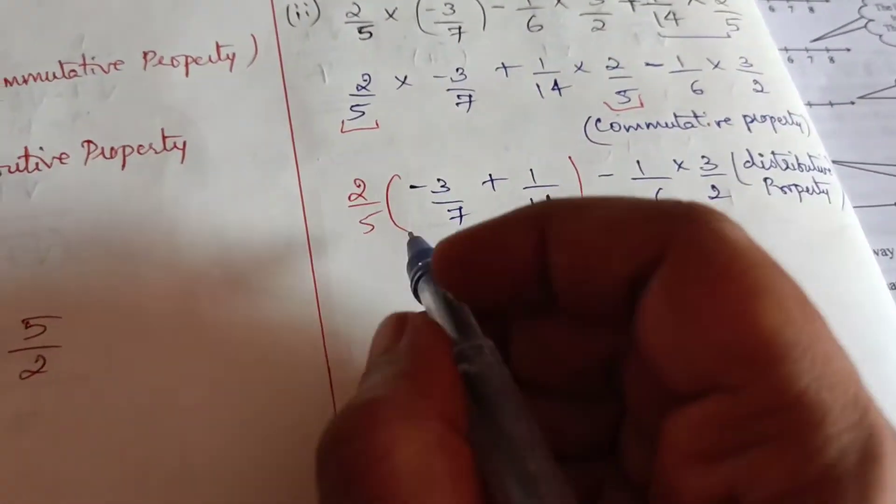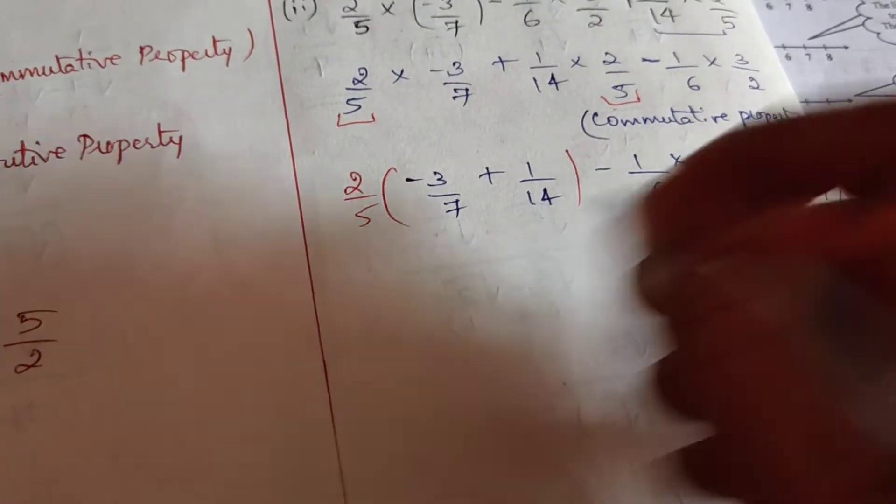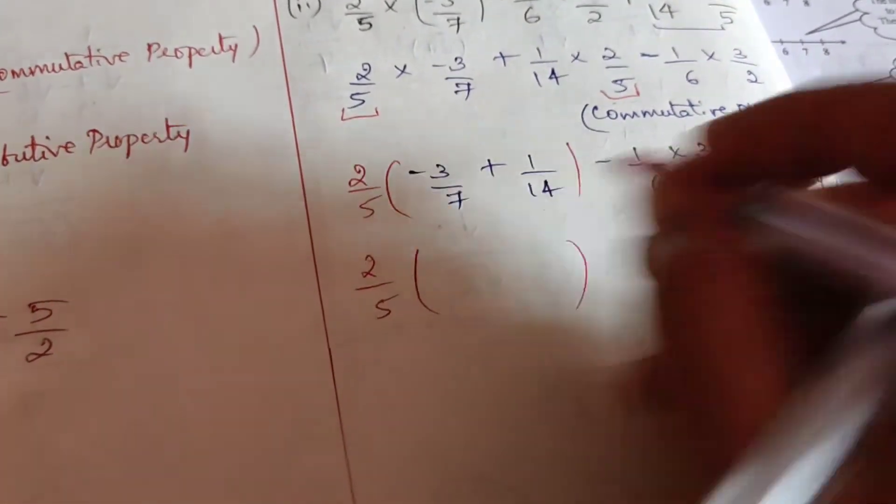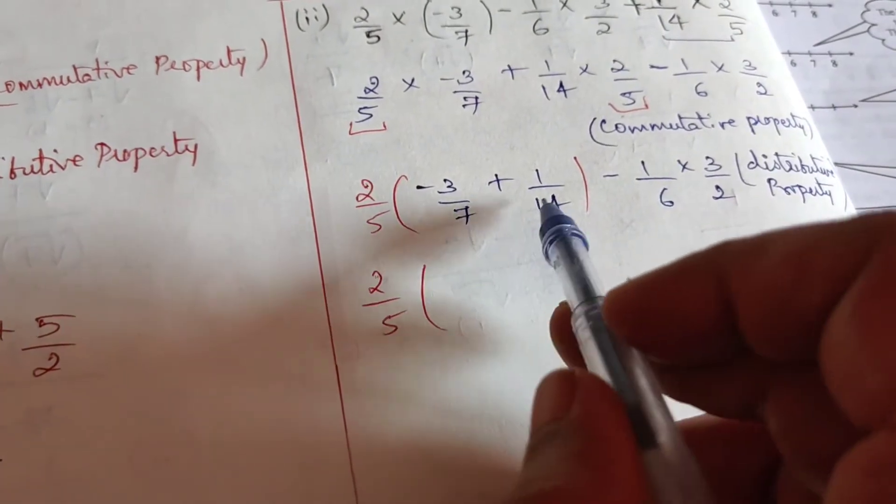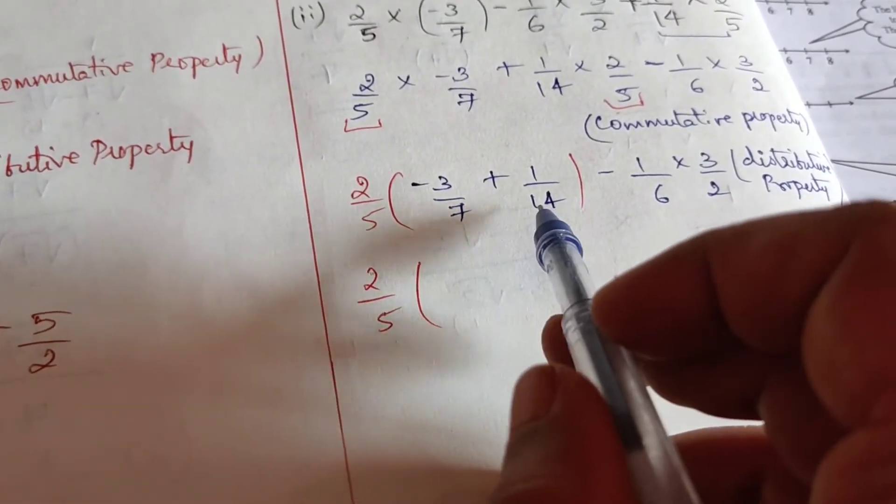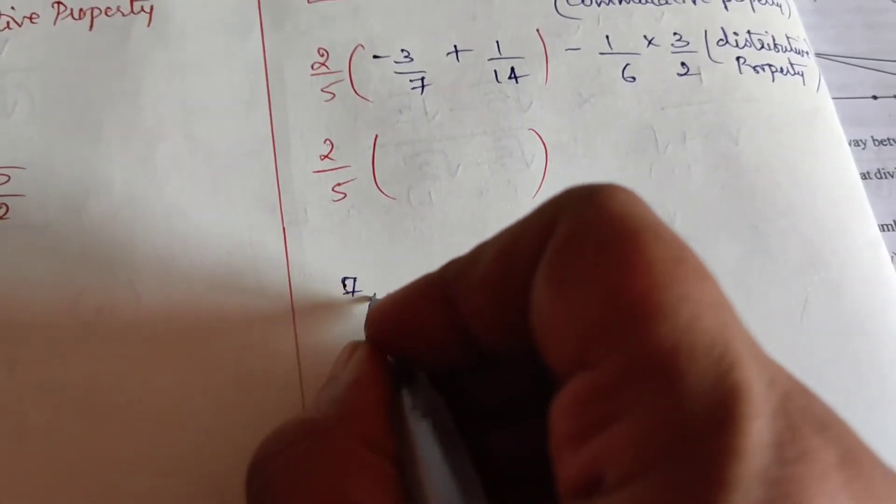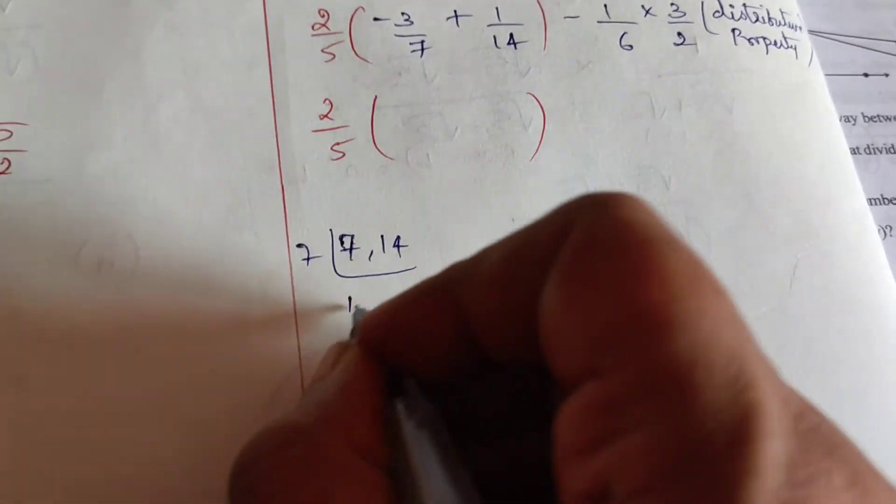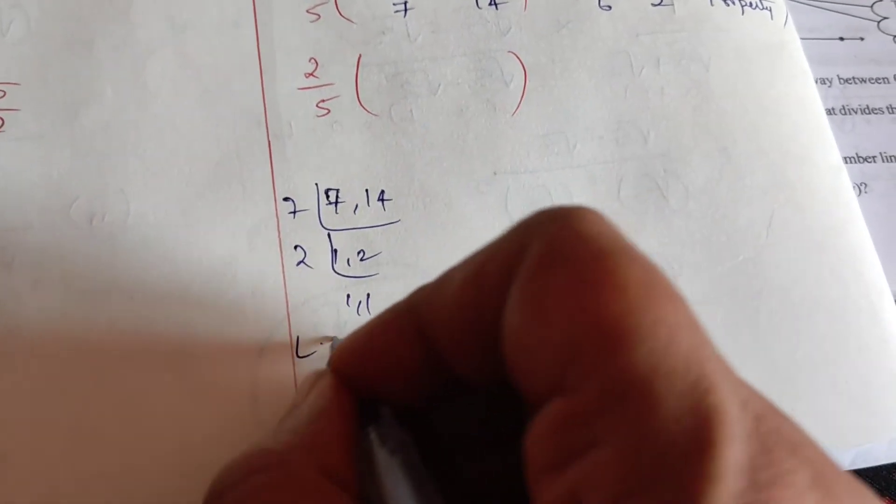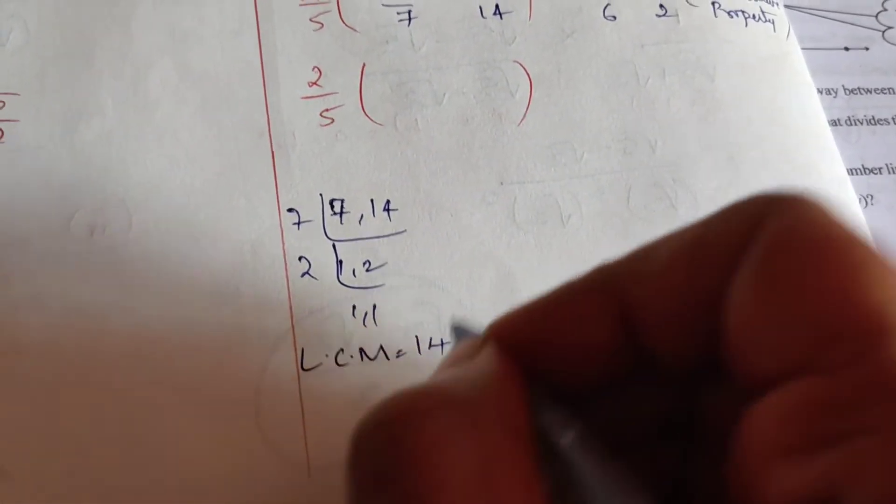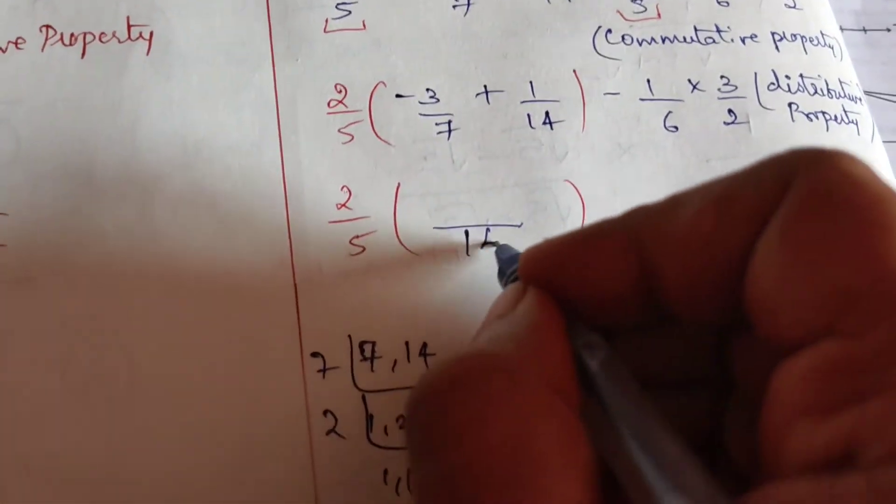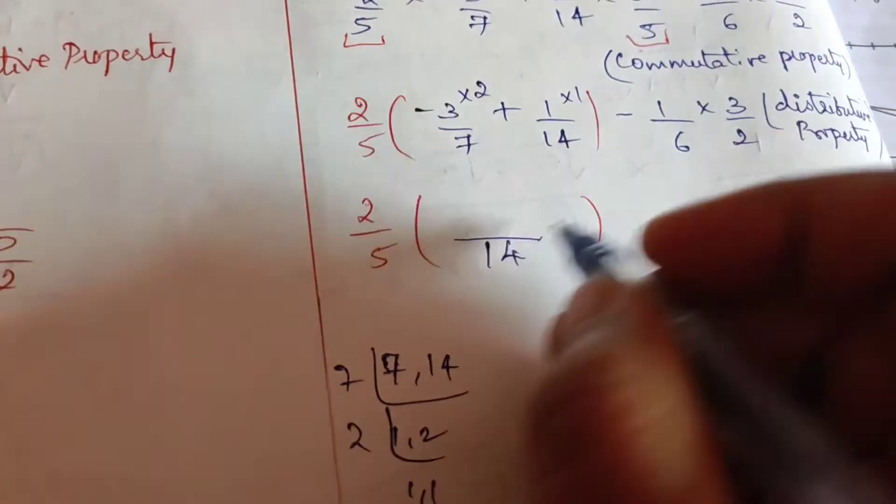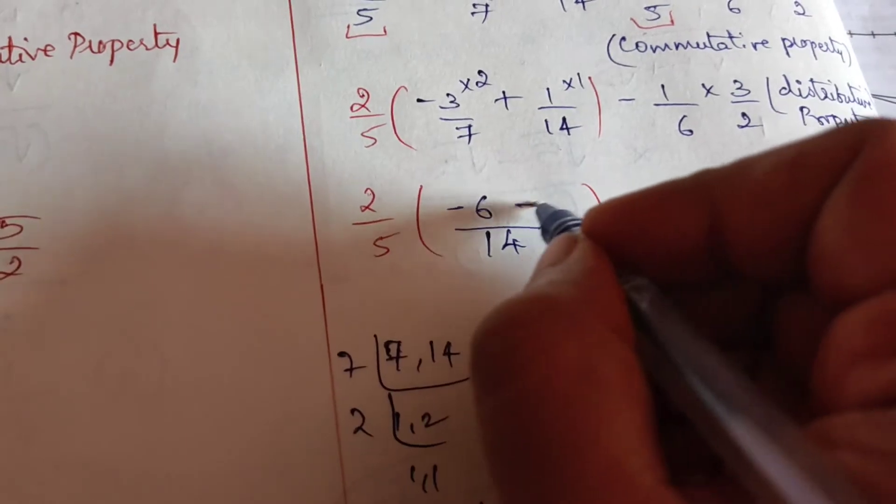Now let us start solving. 2/5 is common, so we will write 2/5. Now how do we solve fractions when the denominators are different? We take LCM. So let us take LCM: 7 and 14, so 7 × 1 = 7, 7 × 2 = 14. LCM is 14, hence we get 14. So we are going to write here LCM is 14. 7 × 2 = 14, 14 × 1 = 14, so -6 + 1.